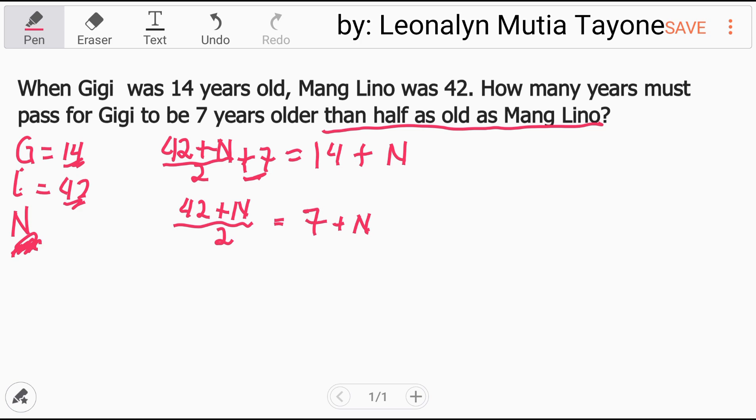Next, this 2 is dividing 42 plus N. When we transfer it to the other side, it becomes multiplication. So 42 plus N remains here, and 2 multiplies on the other side. Now let's solve: 2 times 7 equals 14, plus 2 times N equals 2N.